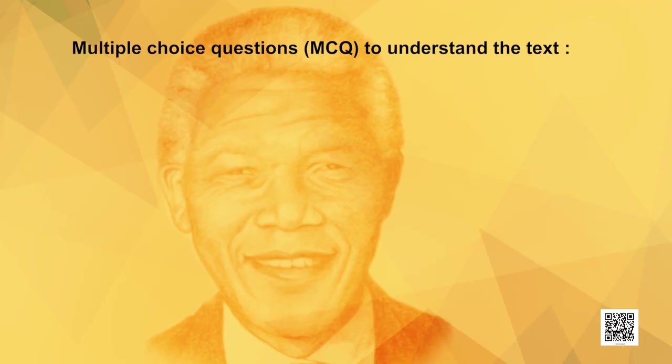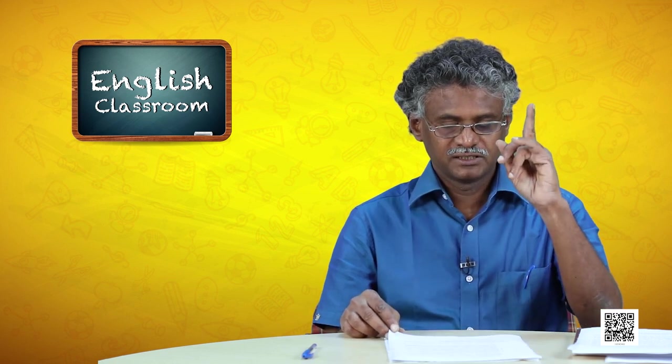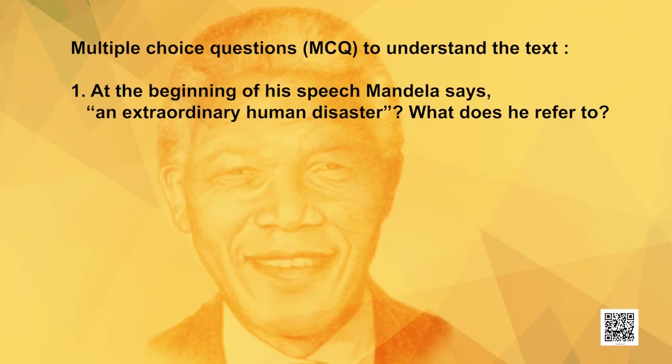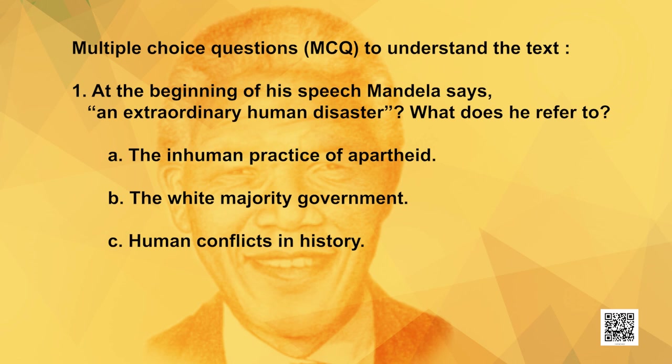Now another task — slightly deeper — a series of multiple choice questions. I am going to ask some MCQs with three or four options. Note that in some questions more than one option may be correct. Question 1: At the beginning of his speech, Nelson Mandela says 'an extraordinary human disaster.' What does he refer to? A) The inhuman practice of apartheid. B) The white majority government. C) Human conflicts in history.